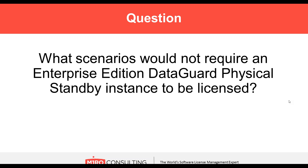It has to be licensed utilizing the same metric. It doesn't have to be the same amount of licenses — if your standby instance is in a physical environment that is smaller in processing bandwidth than your primary, it doesn't have to match exactly. But if you're using the processor metric in your primary, you have to license your standby for processor as well. There's really no other way — when you're using Data Guard, that automatically sets that trigger and you have to license it.